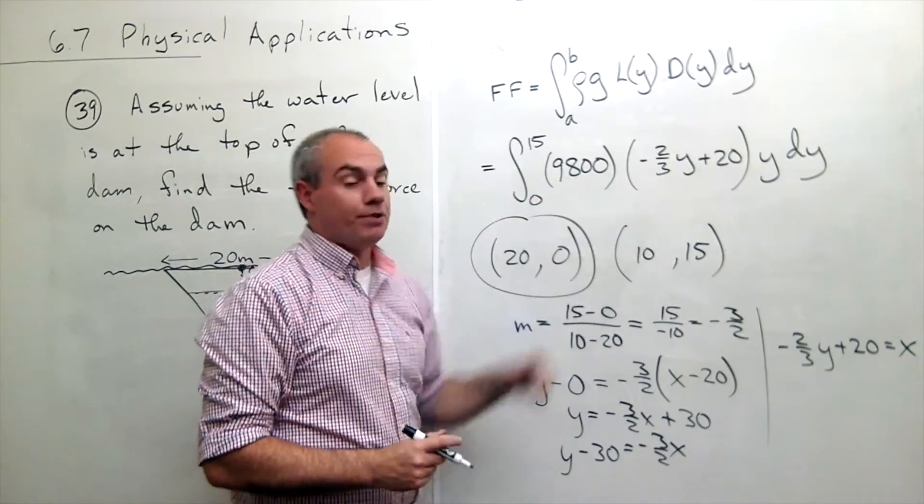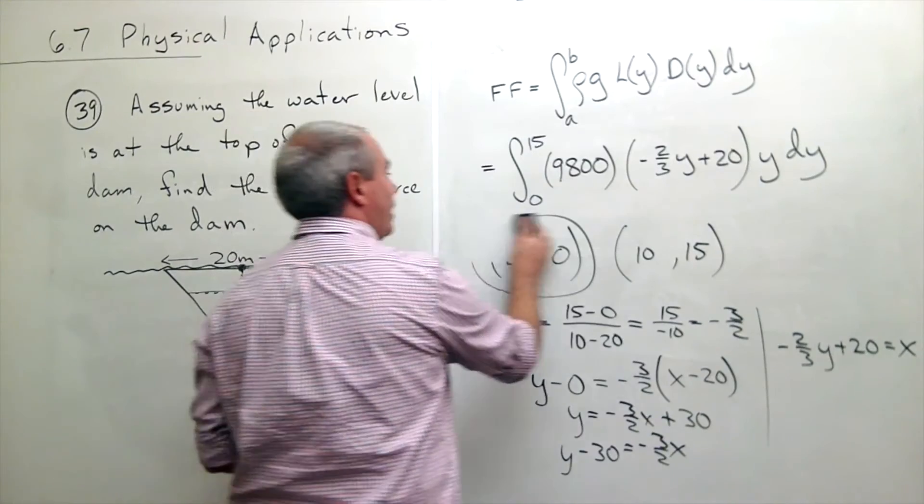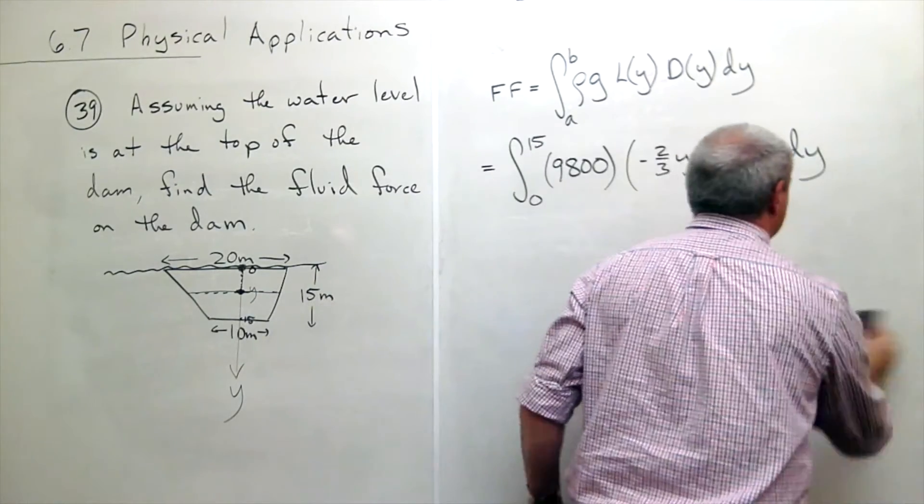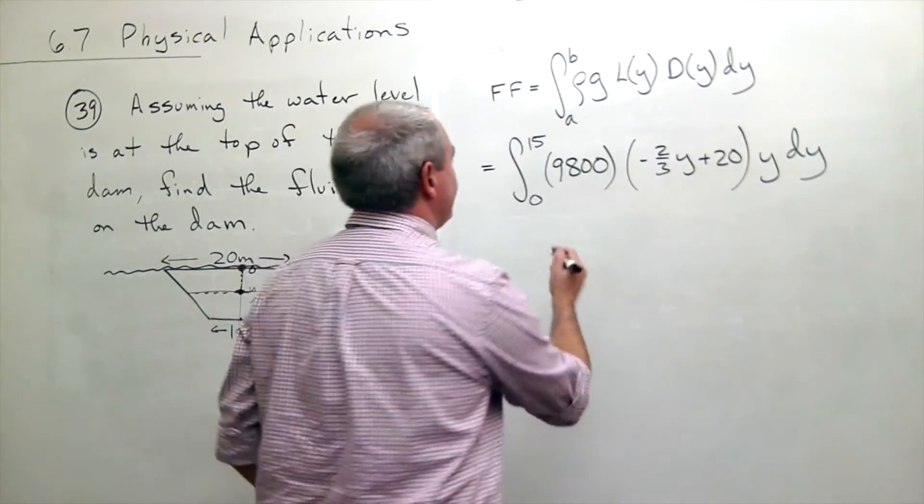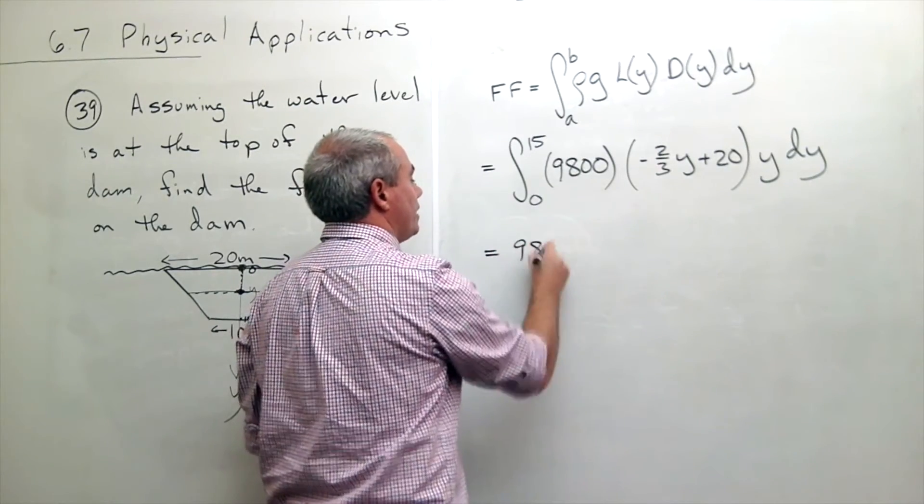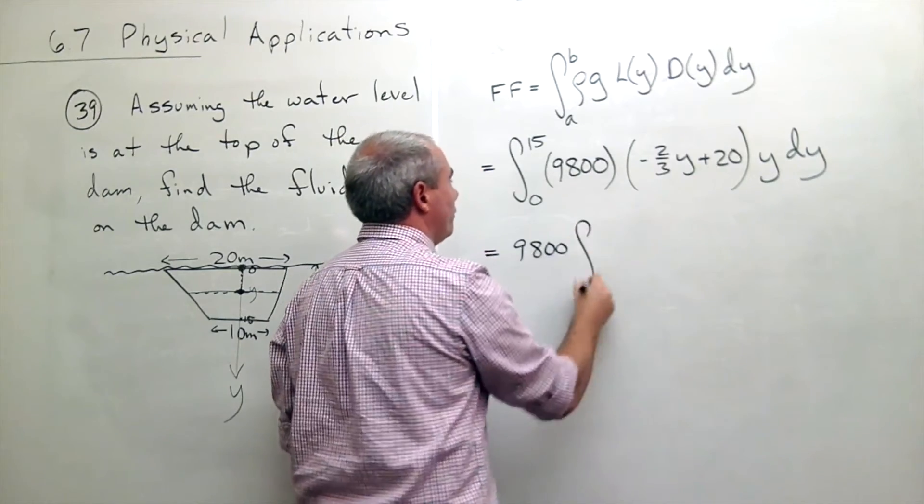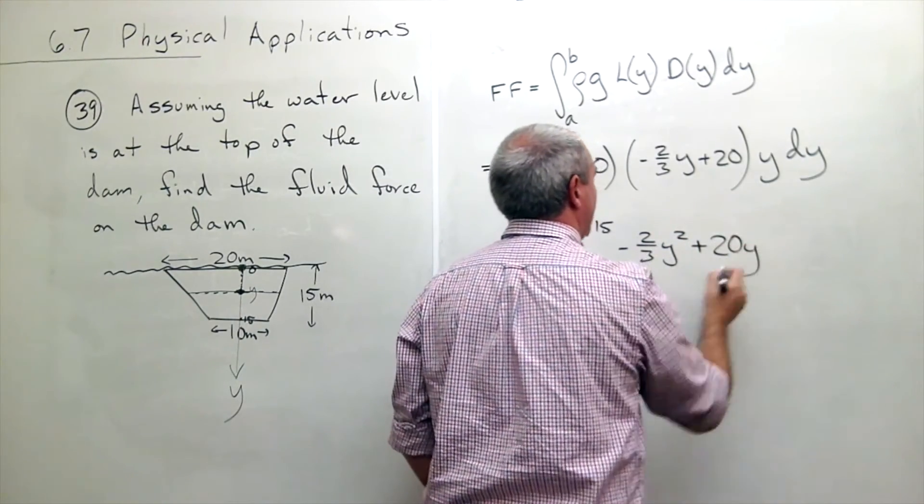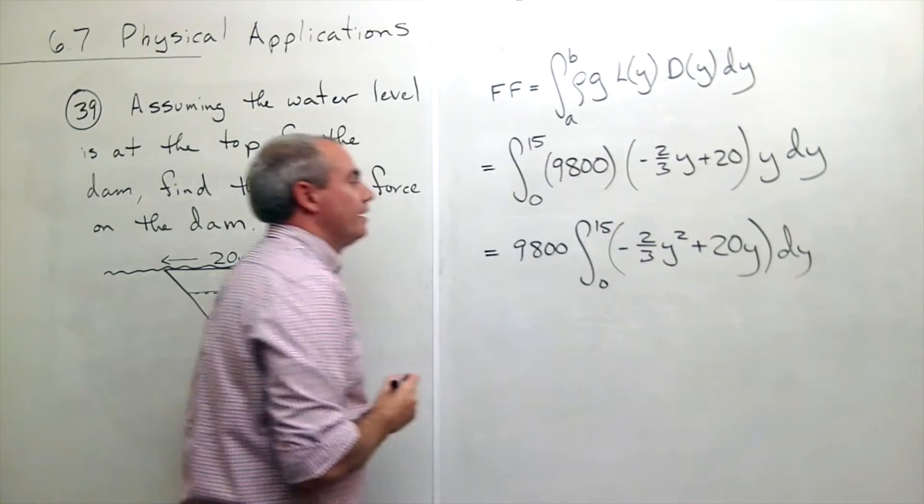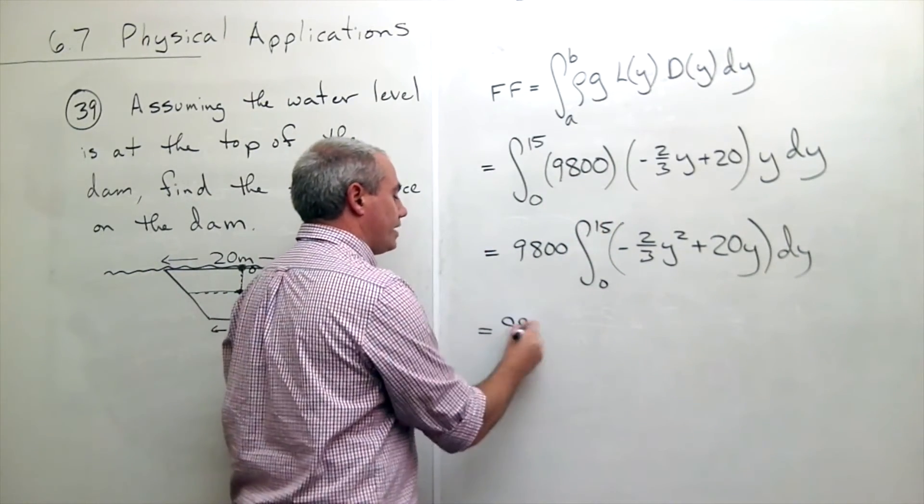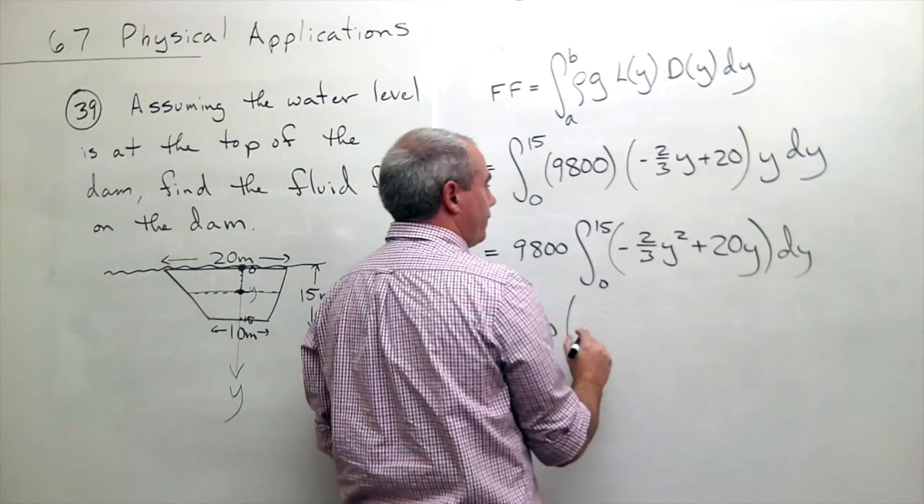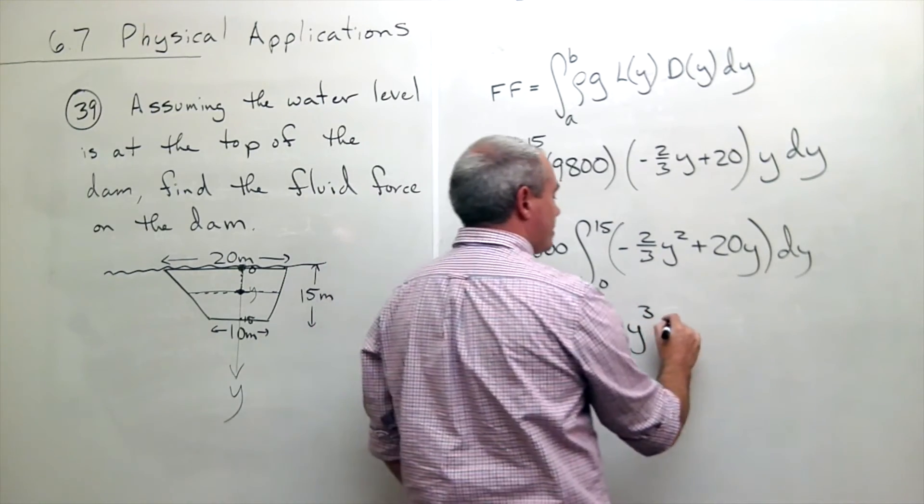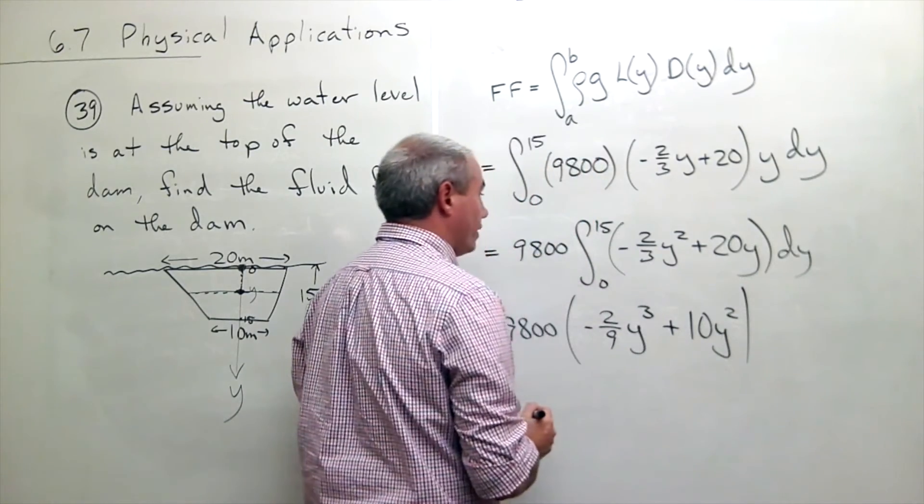Now I actually need to compute that. So let's erase the work I did to find the length, and then we'll finish this off. So I can pull out a constant of 9800, and then I get the integral from zero to fifteen of negative two-thirds y² plus twenty y dy. Take an antiderivative. I still have my 9800 times, antiderivative here would be negative two-ninths y³ plus ten y² evaluated from zero to fifteen.